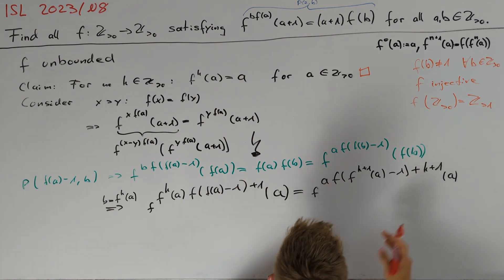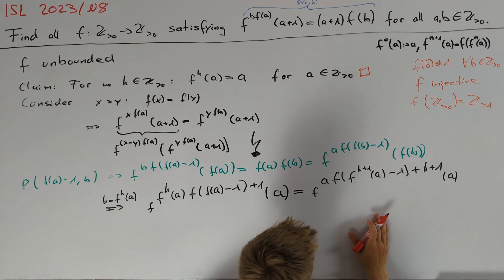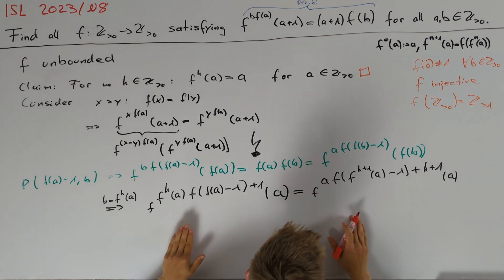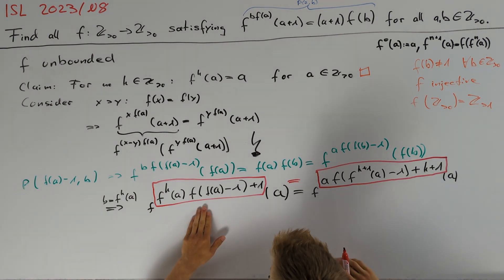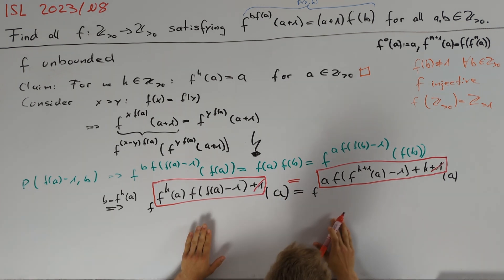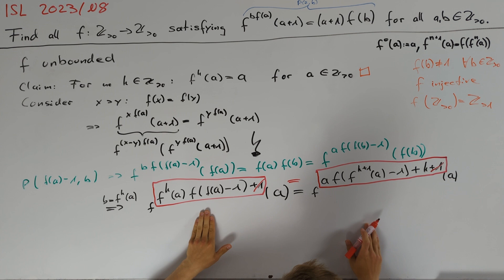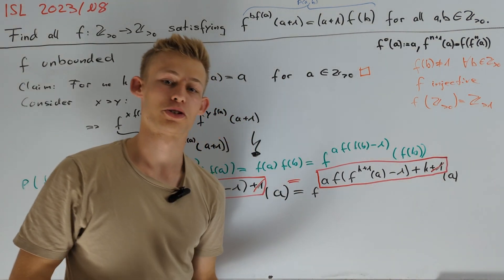Using that f is injective, again, we can erase f's from both sides until at one side there is only an a left. And now, using the claim, we know that on the other side there is also only an a left. Hence, we apply f on both sides on a equally many times and therefore our exponents are equal. To get a product on the left hand side, let's moreover erase the 1. This equation is not really nice, but since we have a product on the left hand side, we can try to use this to get some divisibility conditions.